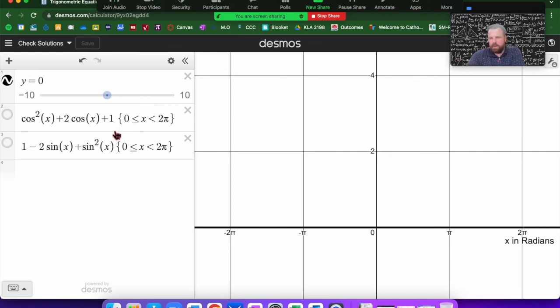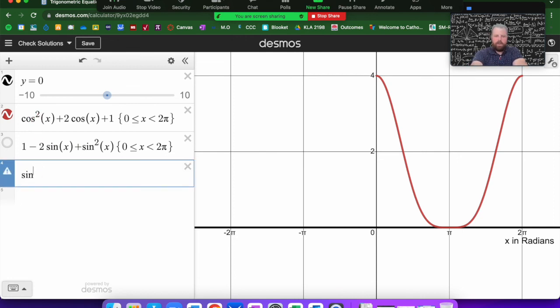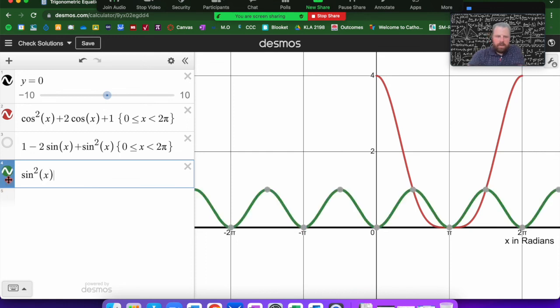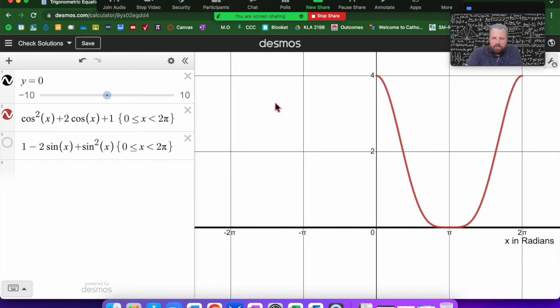With the questions I want you to do today, I've got this check solutions that opens in Desmos. When I open Desmos, you can see I've already got one of the first questions in there. If I turn this graph on, one question asks you to solve between 0 and 2π. You can see I've graphed that equation. To type a power with trigonometry, you type the trig function, then put the power before the bracket x.